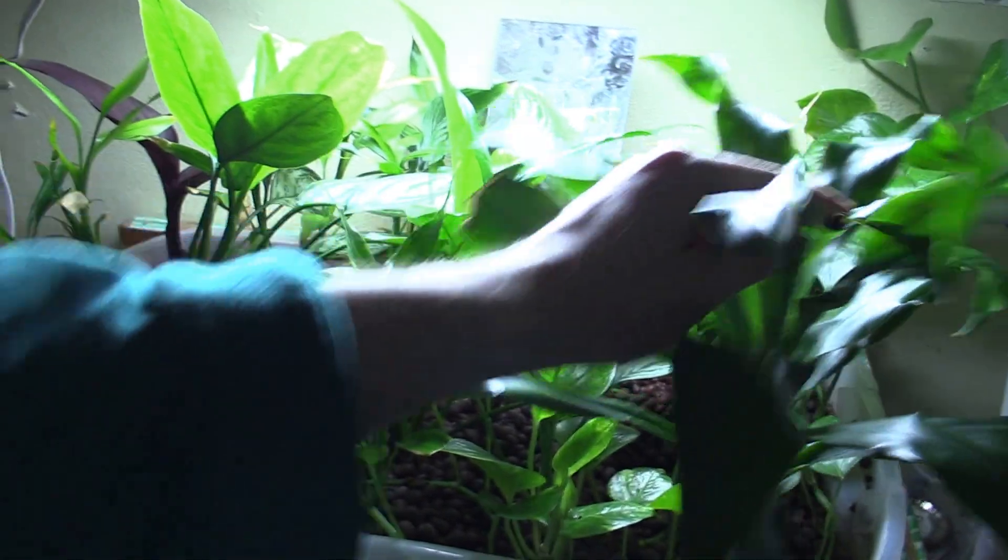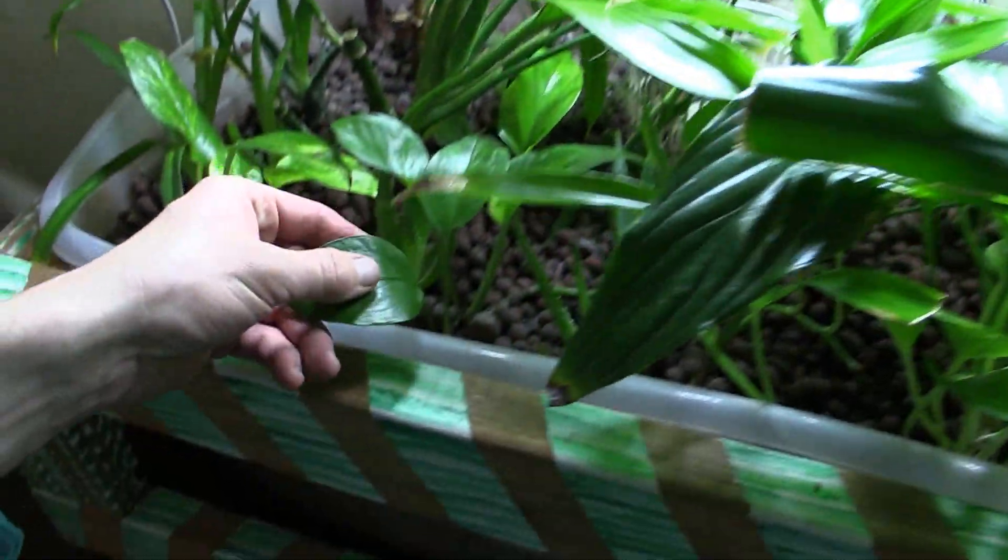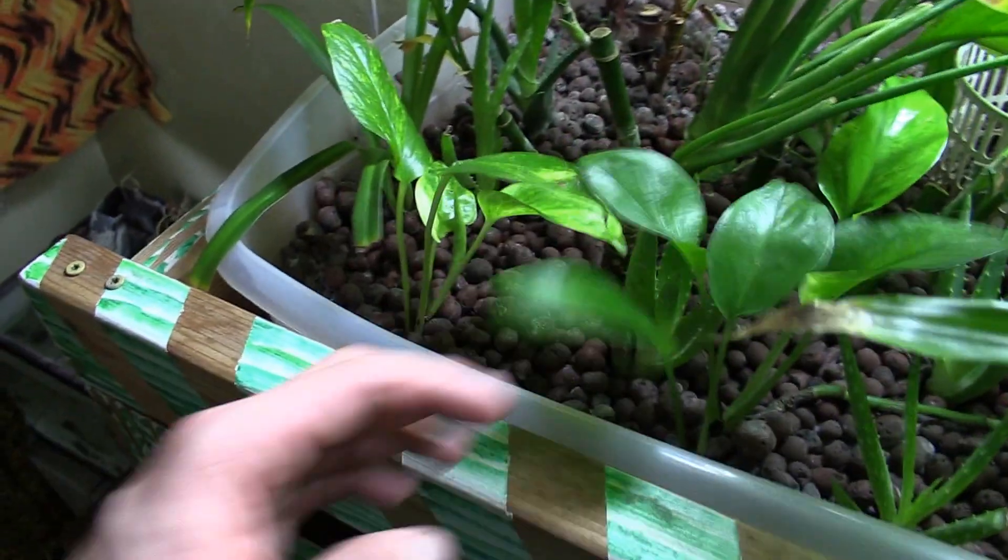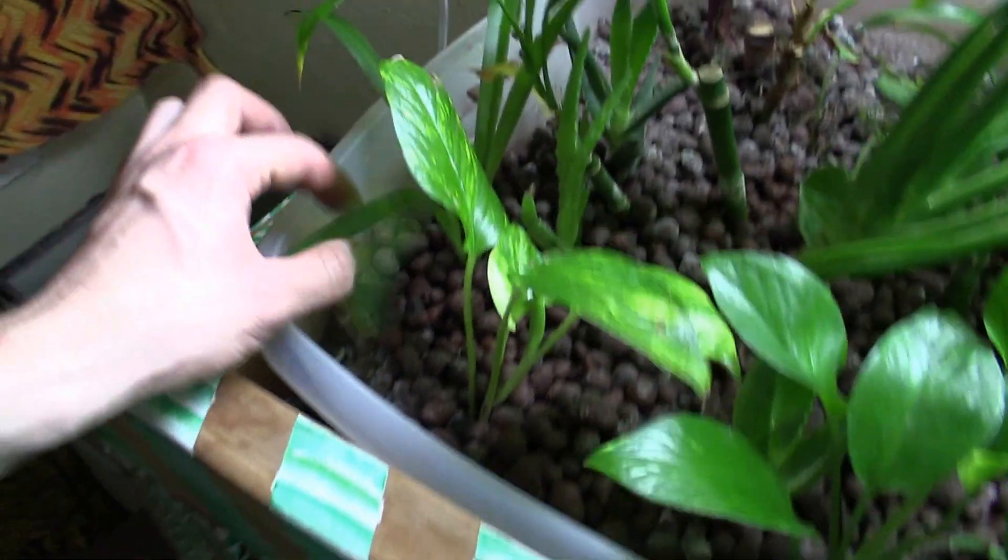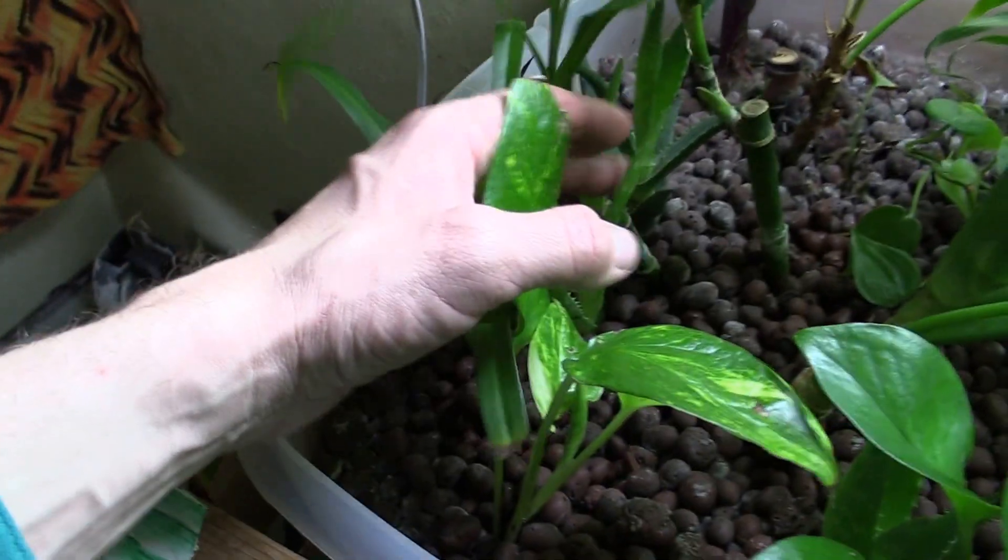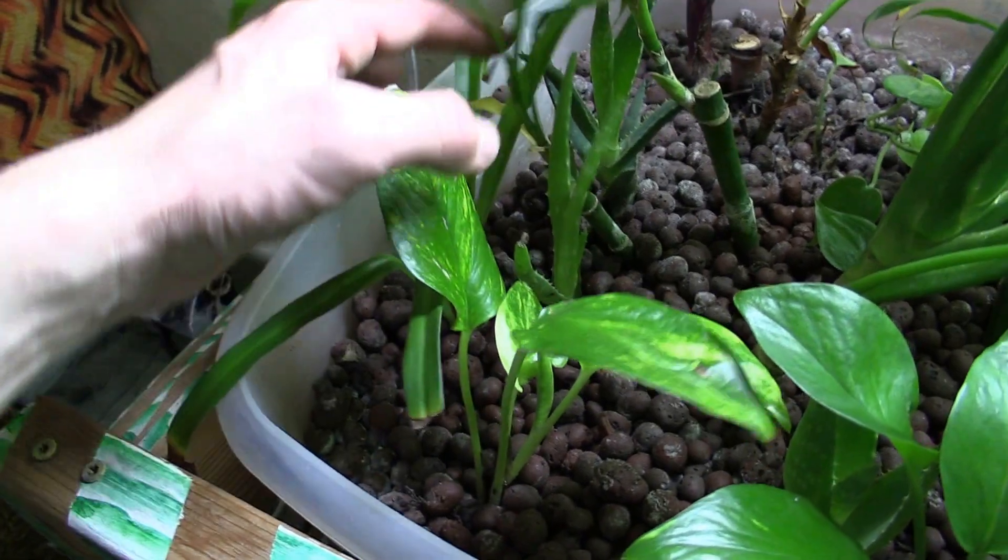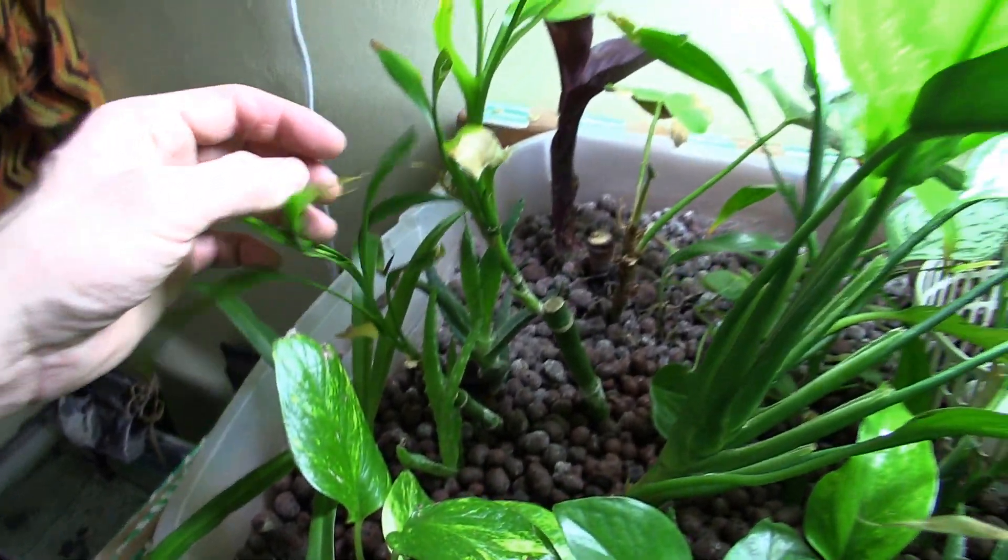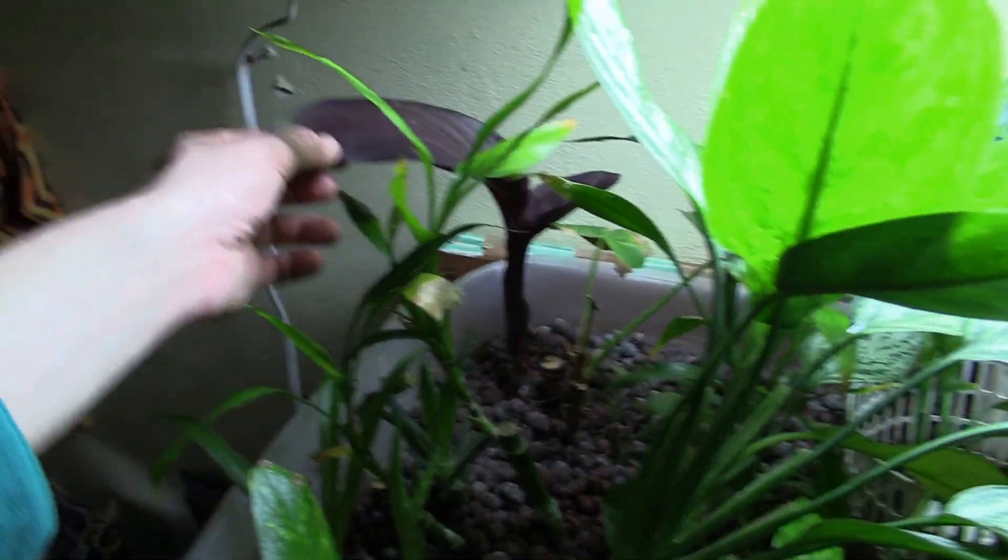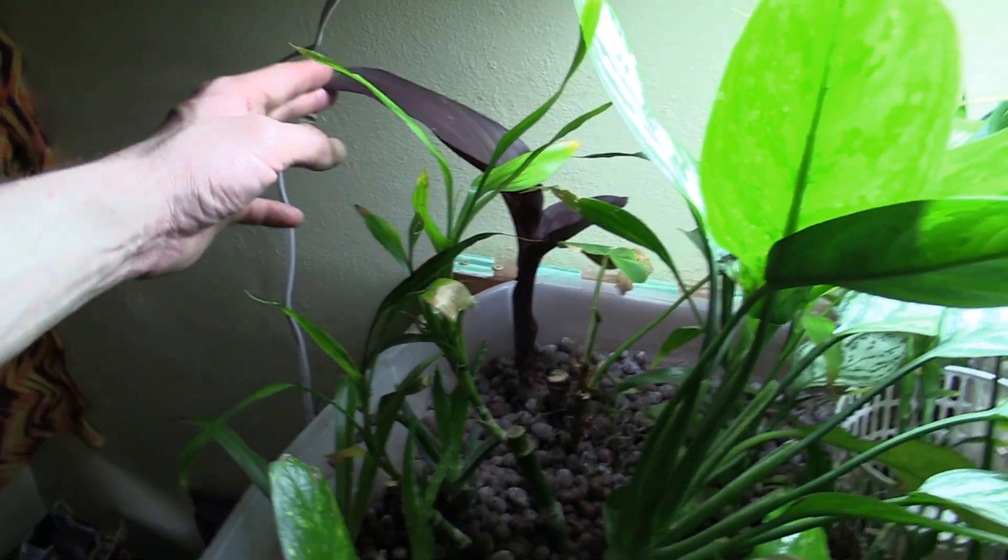And then on top we have different things like Dracaena palm, this is some Pothos, more Pothos, this is a spider plant, these are some aloe, this is Lucky Bamboo, this is a Cana I just put in there a few days ago.